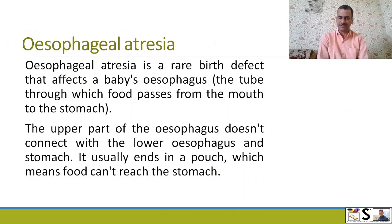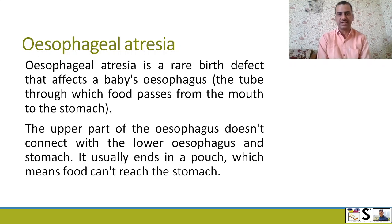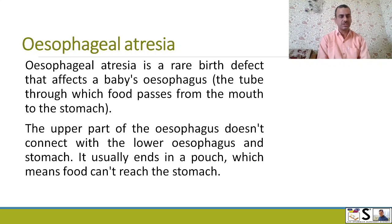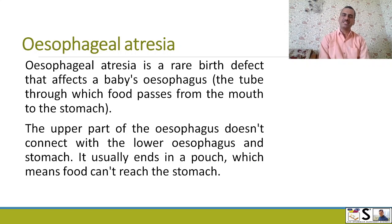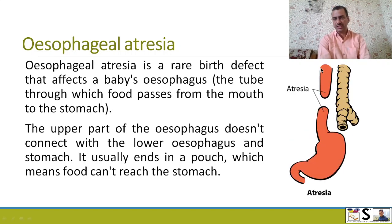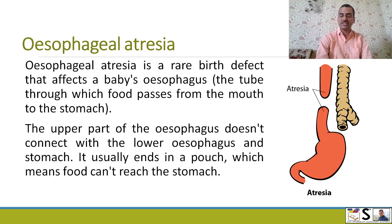What is esophageal atresia? Atresia means a blockage or a blind pouch. Esophageal atresia is a rare birth defect that affects a baby's esophagus — also known as the food pipe, through which food passes from the mouth to the stomach. The upper part of the esophagus doesn't connect with the lower part or the stomach; it usually ends in a pouch, meaning food cannot reach the stomach. This is a birth defect called esophageal atresia.